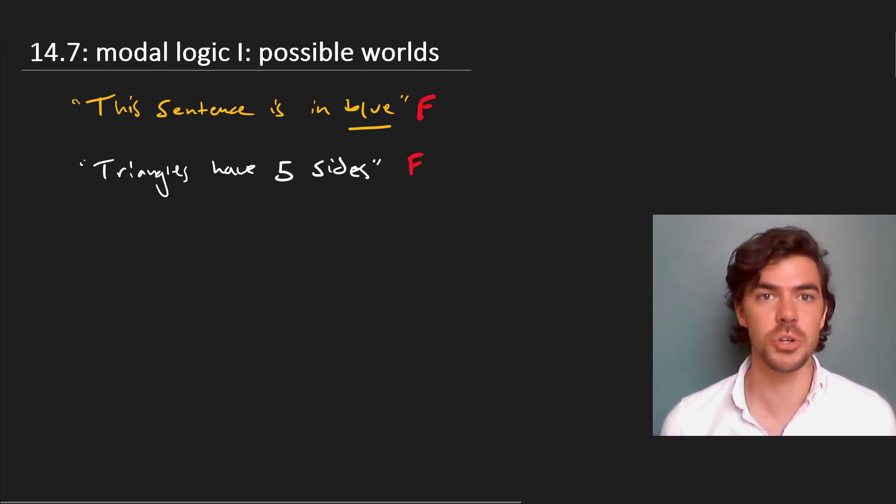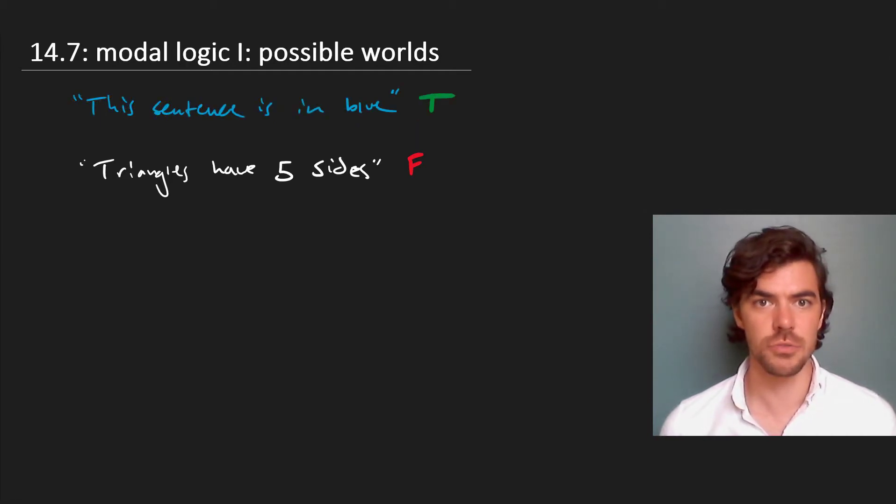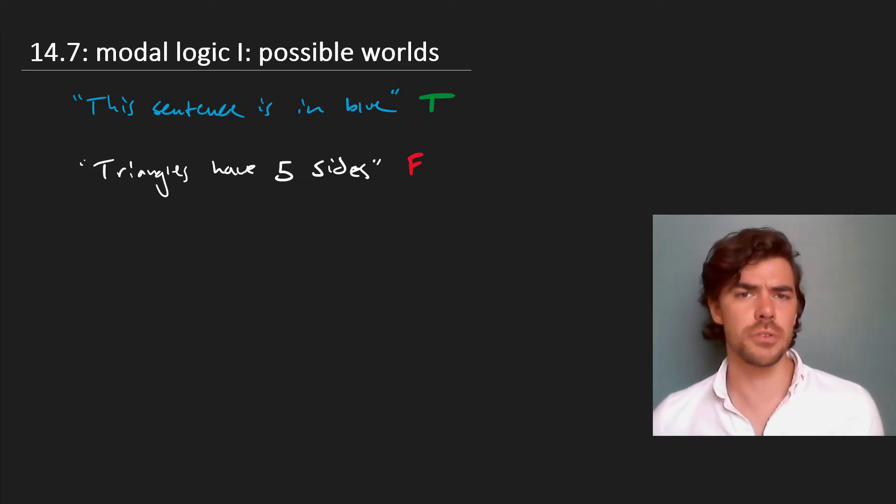than this sentence is in blue, in part because we could just change this sentence and make it be in blue, in which case it would come out true. So some truths are subject to change or could be other than they are, and some aren't. Similarly, some truths can't be made false, but other ones can.